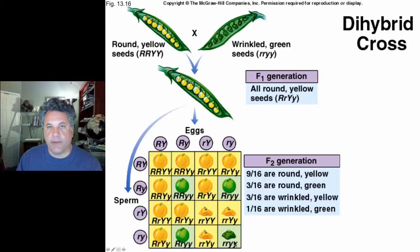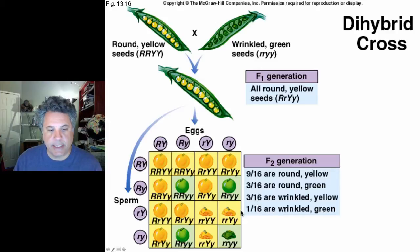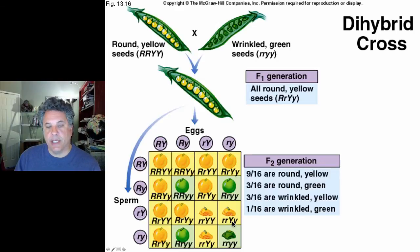Only 1/16 of progeny will be doubly recessive homozygous, resulting only when a little r little y egg is fertilized by a little r little y sperm. The 3/16 groups with dominant phenotype for one trait and recessive for the other result from homozygous recessive at one locus combined with either homozygous dominant or heterozygous at the other locus, since dominant alleles dictate phenotype in heterozygotes.